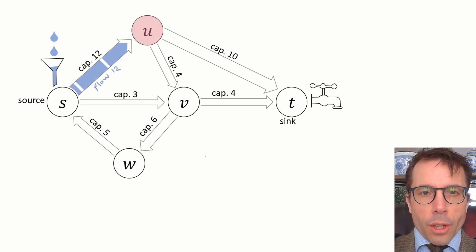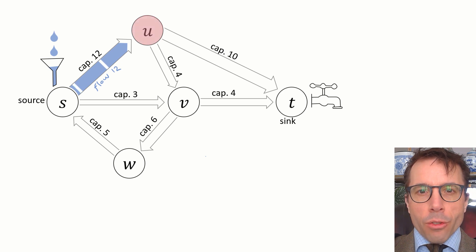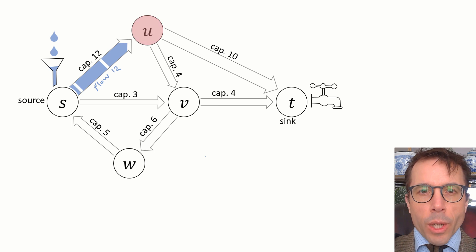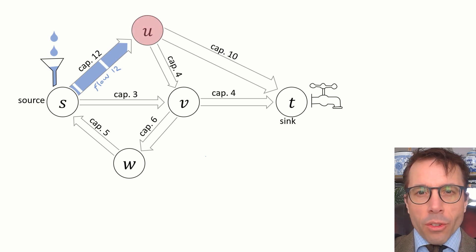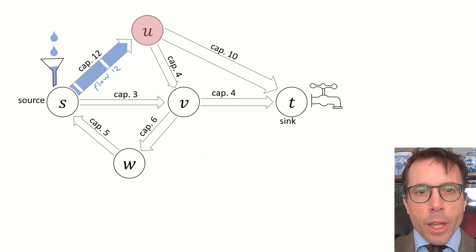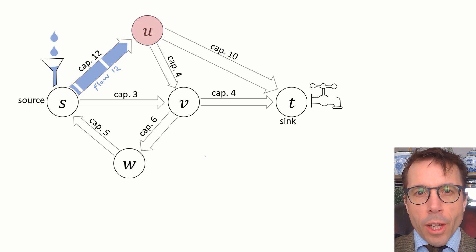Well, let's start. We could send the flow down this first pipe, the S-to-U pipe. The pipe has capacity 12, so let's try to send as much as we can. It doesn't matter what the units are — just think of them as litres per second or vehicles per hour, or whatever you like. So there's 12 units coming into U, and it has to get piped out of U.